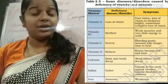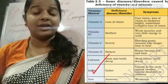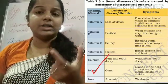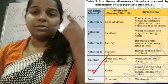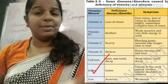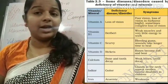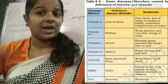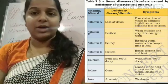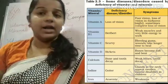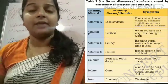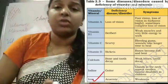Iodine is related to the thyroid gland. Iodine deficiency causes mental disability in children. Next is iron — iron helps in the production of hemoglobin.